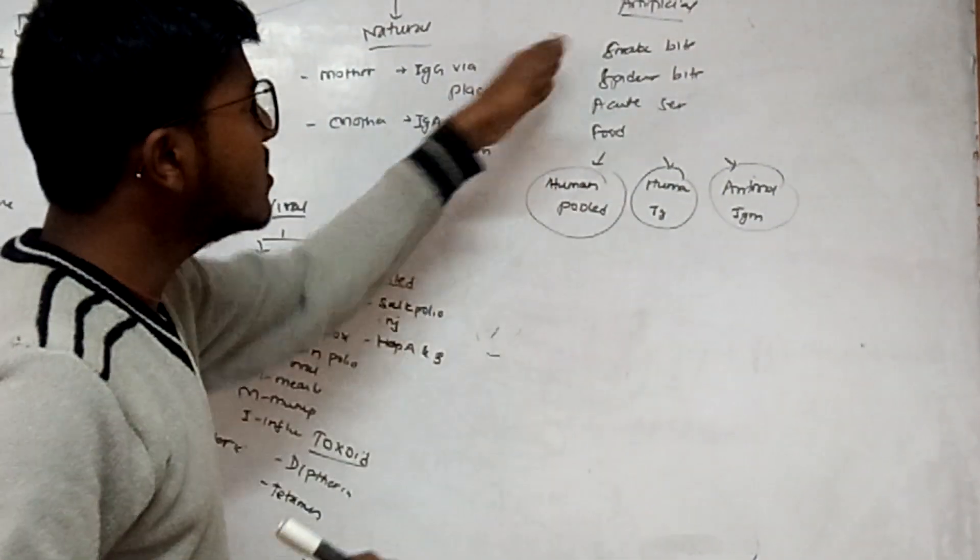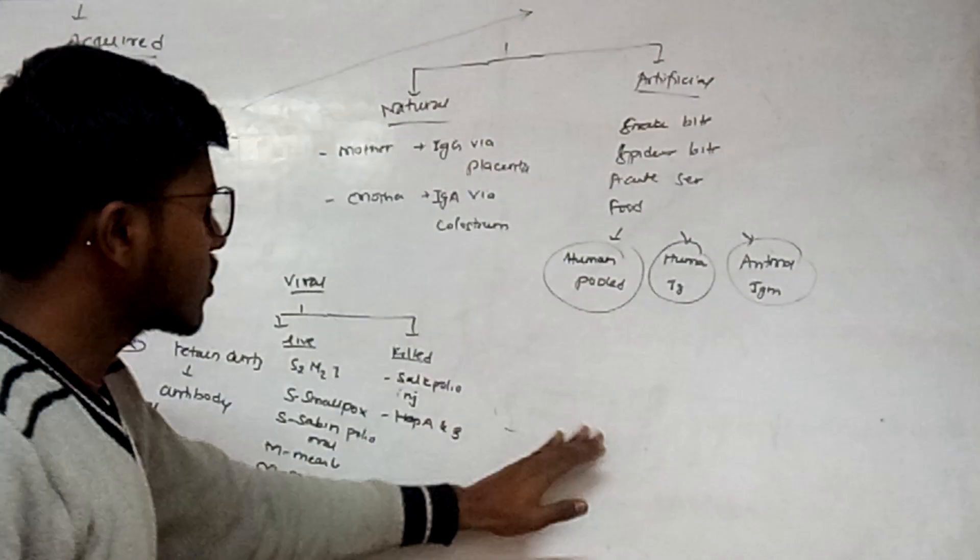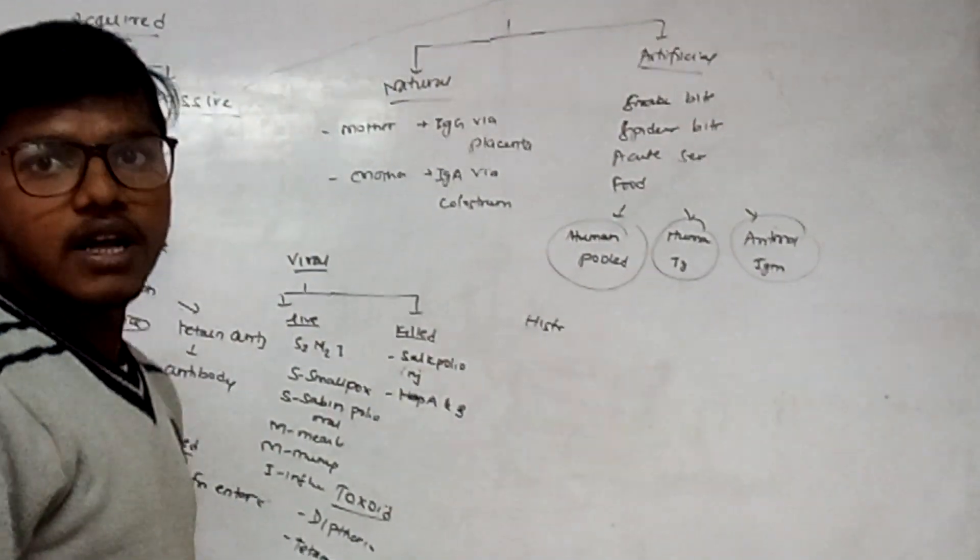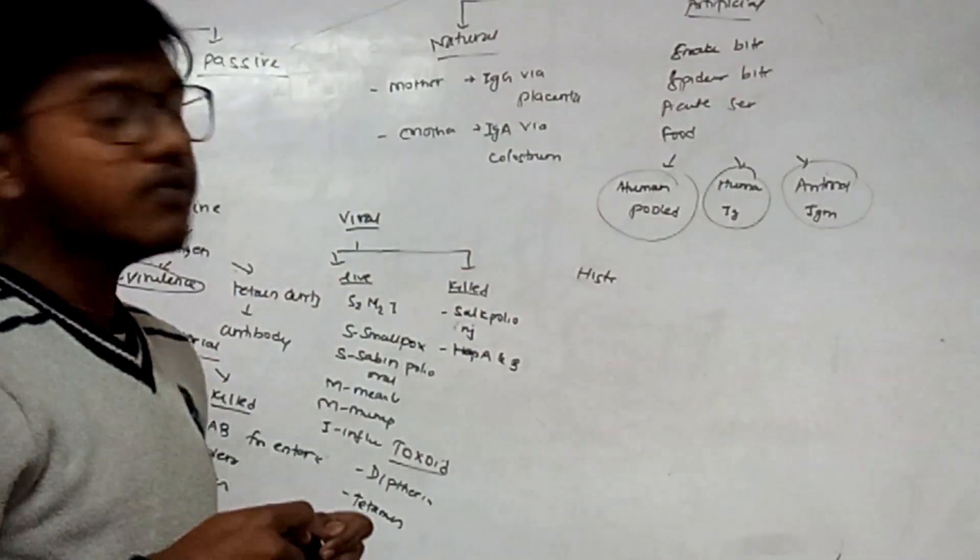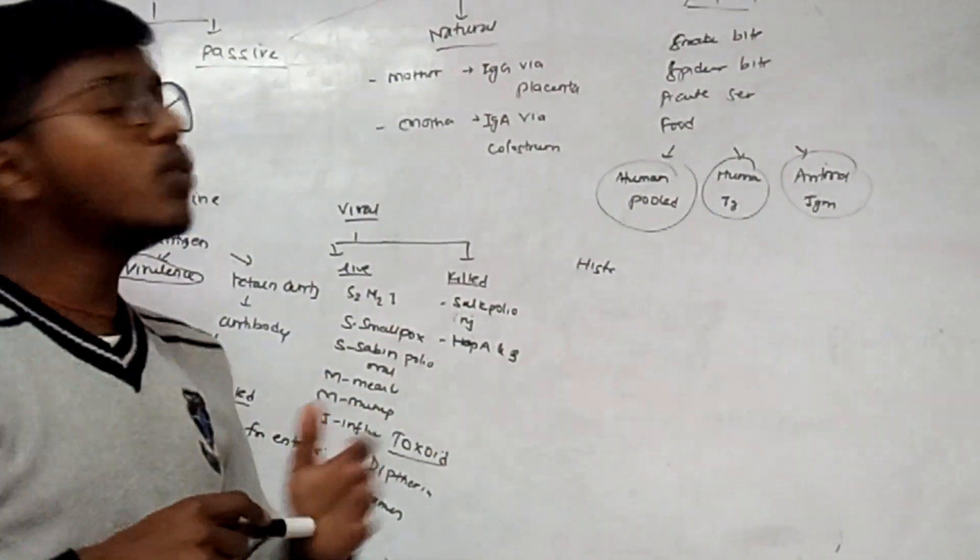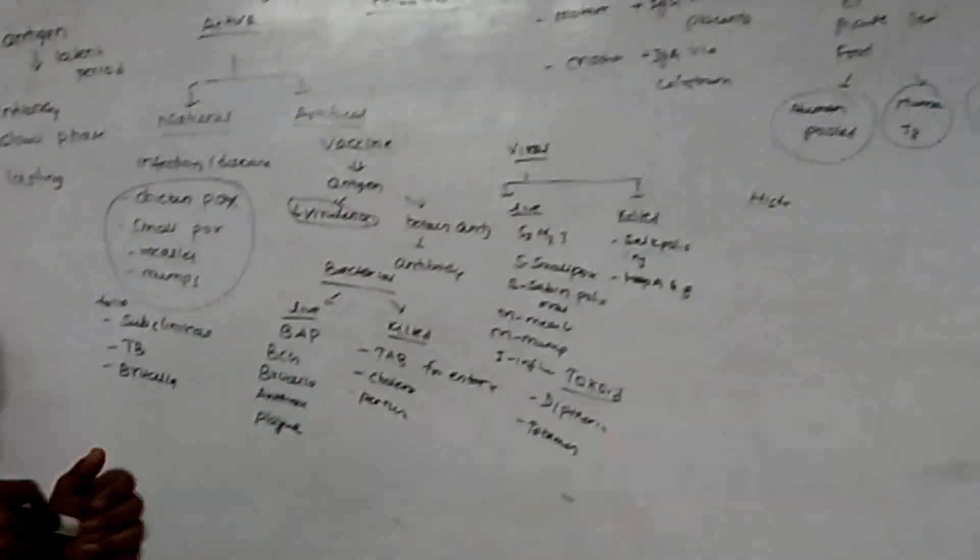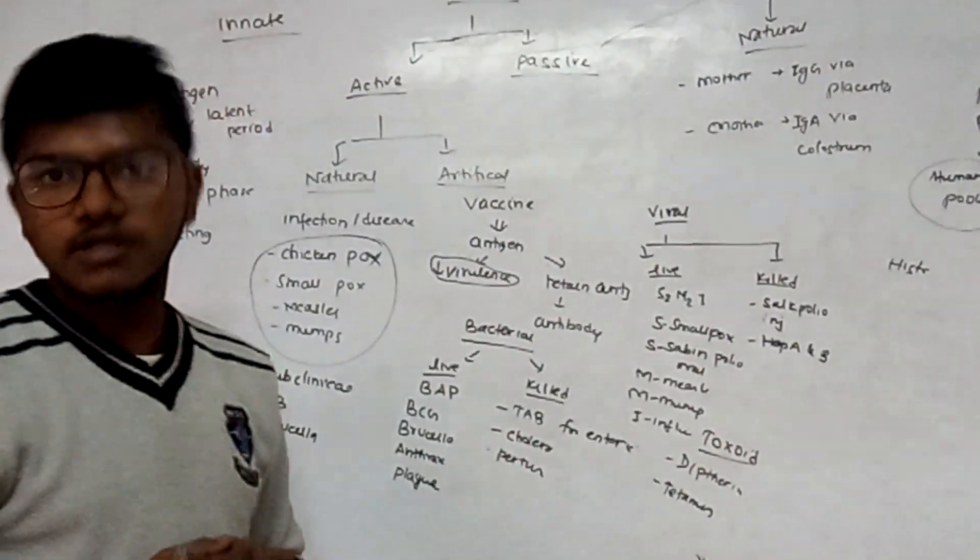This is the case of artificially acquired passive immunity. Coming to history - who is the father of immunology? Edward Jenner. Who laid the foundation of vaccination? Louis Pasteur. Who laid the foundation of passive immunization? Emil von Behring. If this video is helpful to you, please like and tap the subscribe button for next videos. Thank you.